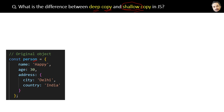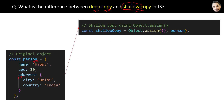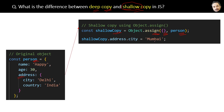Suppose we have an original object like this. Inside the person object we have another object, address — that is normal in large applications. First we will make a shallow copy of the object using the Object.assign method, where this is the target and the person object is the source. The cloned object will be assigned to the shallow copy variable.